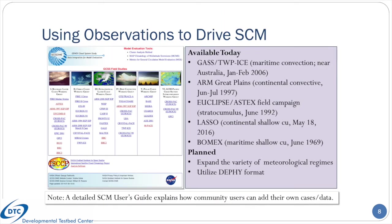In version 5, there are several supported cases included. All of them are based on observational field campaigns, and most come from GEWEX cloud system study cases. There are two deep convection cases — one over the ocean from the TWP-ICE field campaign, and one over land from the ARM Southern Great Plains Observational Site in 1997. The other three cases are all shallow convection related: the ASTEX case representing a stratocumulus-to-cumulus transition over the ocean, the BOMEX case featuring shallow tradewind cumulus over the ocean, and the LASSO case featuring continental shallow cumulus. The next version will feature two improvements that will greatly expand the number of cases.